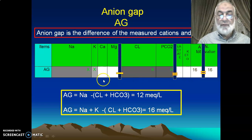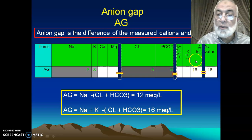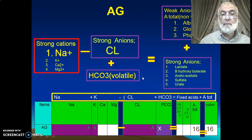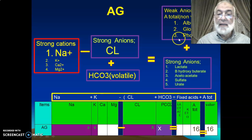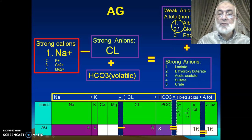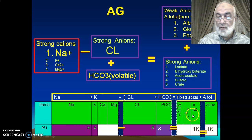The total weak acids are 16 milliequivalents per liter. If we add potassium, it will be 16; if we do not add potassium, it will be 12. So the anion gap equals sodium minus chloride plus bicarbonate, which equals 12 — or 16 if we add potassium. The total weak acids include albumin, globulin, and phosphate.